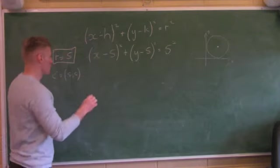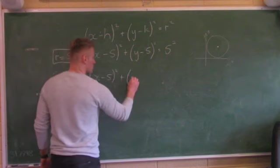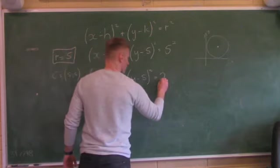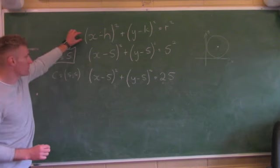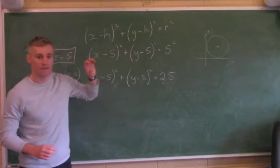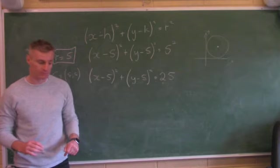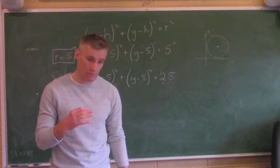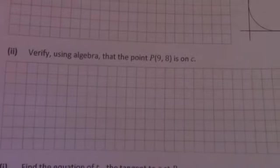All I did was write the formula, sub in my values for h and k from the centre, sub in r as the radius, and work out r squared. The next part of this question: verify using algebra that the point P at 9, 8 is on C. I know the circle, so for part 2: P is 9, 8. Substituting in x equals 9 and y equals 8: 9 minus 5 squared plus 8 minus 5 squared equals 25.